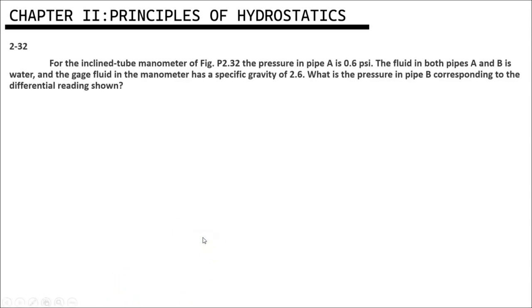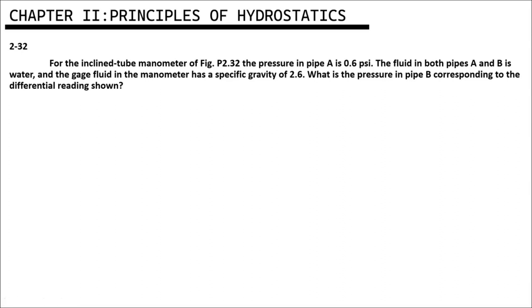Here is our example. Problem 2-32: For the inclined tube manometer of Figure 2-32, the pressure in pipe A is 0.6 psi. The fluid in both pipes A and B is water, and the gauge fluid in the manometer has a specific gravity of 2.6. What is the pressure in pipe B corresponding to the differential reading shown?